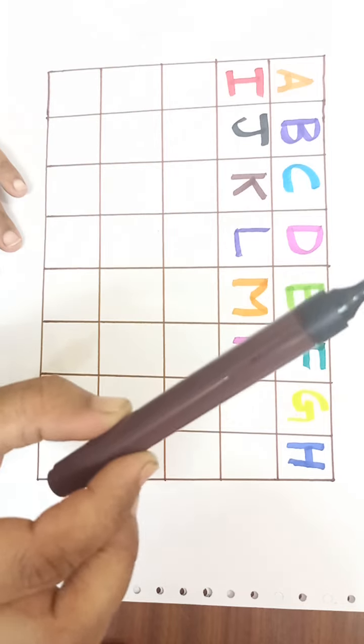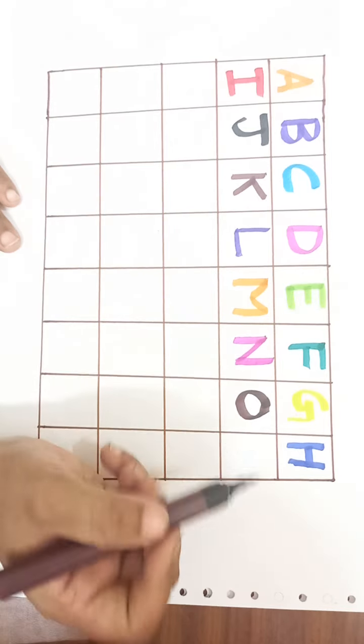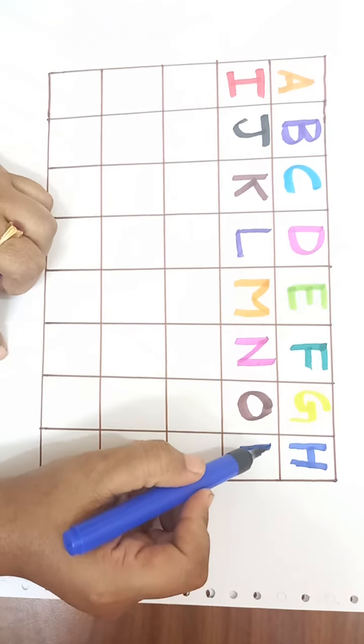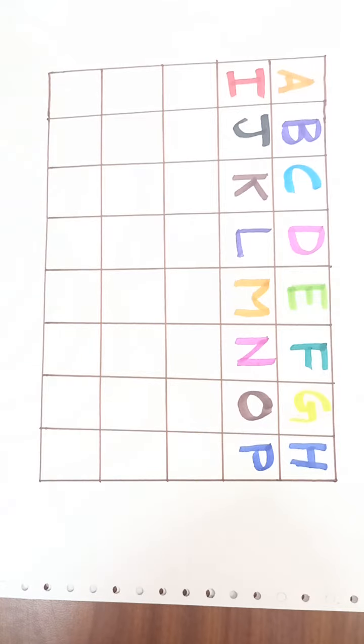Brown color. O. O for ox. O-X, ox. Blue color. P. P for pot. P-O-T, pot.